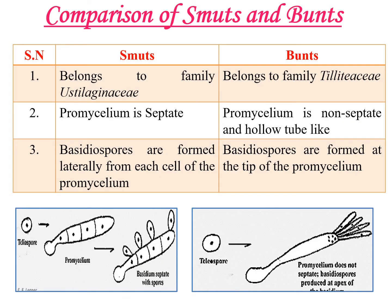The first difference: smut fungi belongs to the family Ustilaginaceae, as we already saw, and bunt fungi belongs to the family Tilletiaceae. The promycelium is septate in the case of smut fungi. You can see that the promycelium, after germination from the teliospore, is divided into four cells — septation is present, from which basidiospores arise.